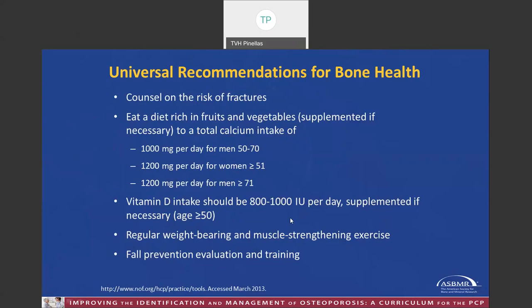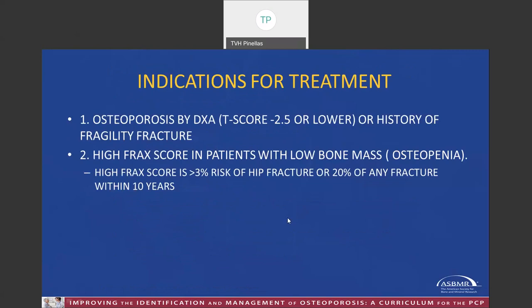Who gets treated? Number one, if you've had a fracture, or if your bone density by DEXA is less than minus 2.5, this defines osteoporosis. Number two, patients with low bone mass or osteopenia who have a high FRAX score — greater than 3% risk of hip fracture in 10 years, or greater than 20% risk of a major osteoporotic fracture within 10 years.